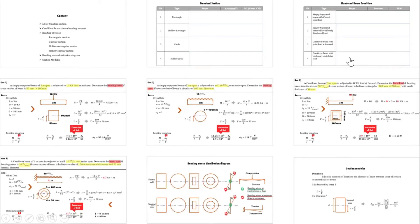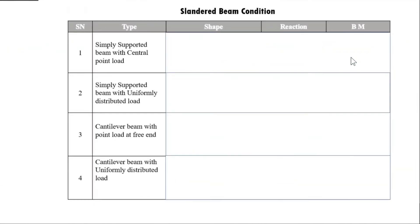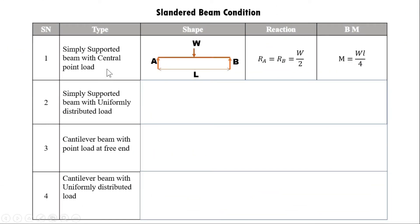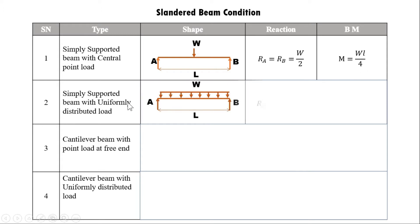Now let us discuss standard beam conditions. For a simply supported beam with a central point load, the maximum bending moment at center is WL/4. For a simply supported beam with a UDL, the reactions RA and RB are WL/2, and the maximum bending moment is WL²/8.